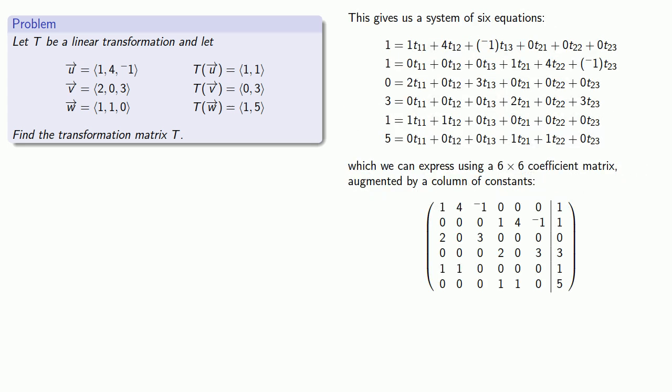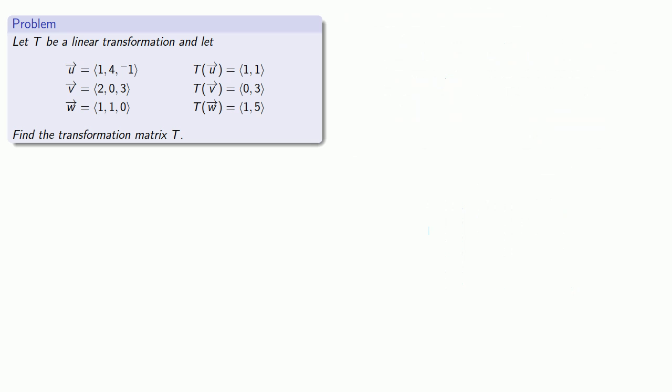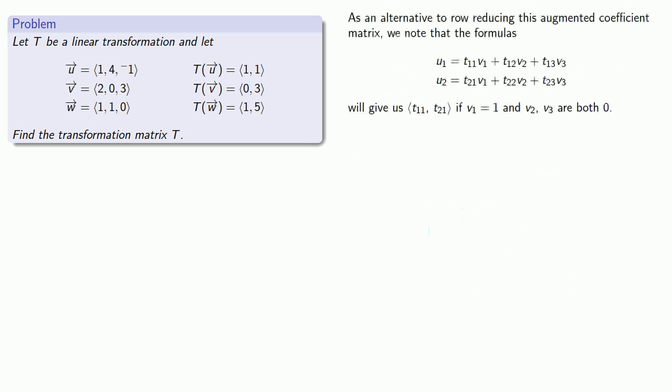As an alternative to row reducing the augmented coefficient matrix, we note that the formulas will give us the entries T11 and T21 if V1 is 1 and V2 and V3 are both equal to 0. And this corresponds to the problem of finding the transformation applied to the vector (1, 0, 0).